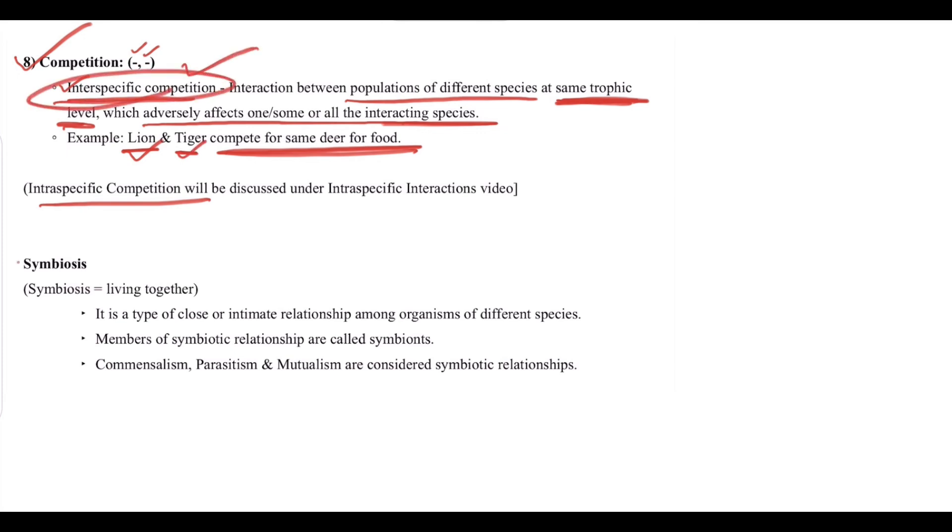Last we have symbiosis, that is living together. It is a type of close or intimate relationship among organisms of different species. Members of symbiotic relationships are called symbionts. Commensalism, parasitism, and mutualism are considered symbiotic relationships.